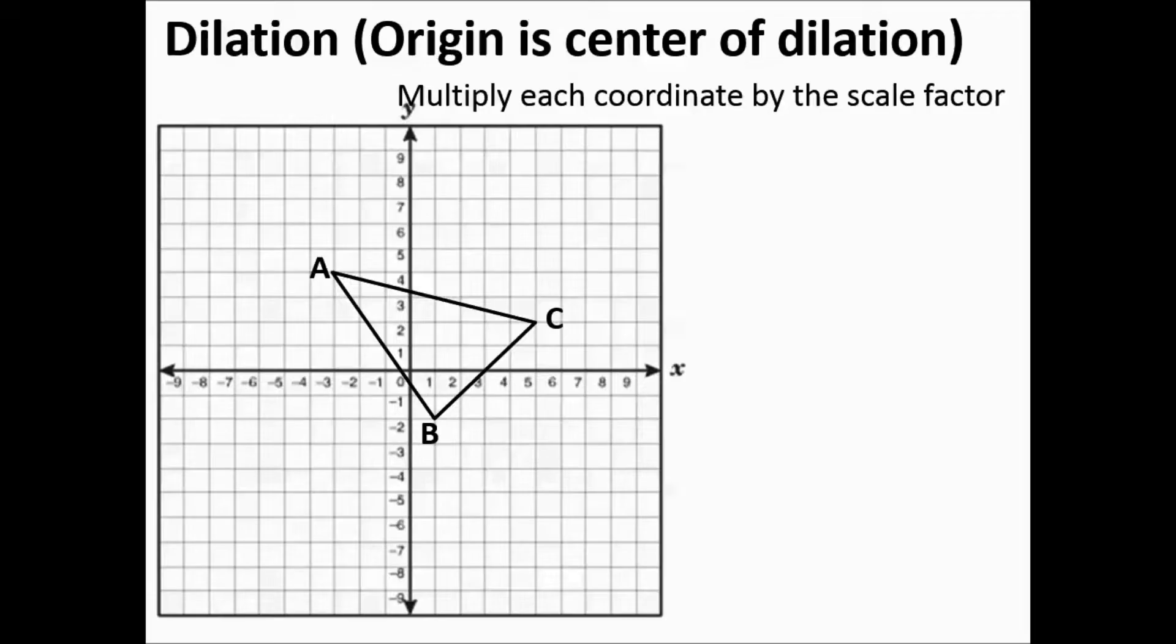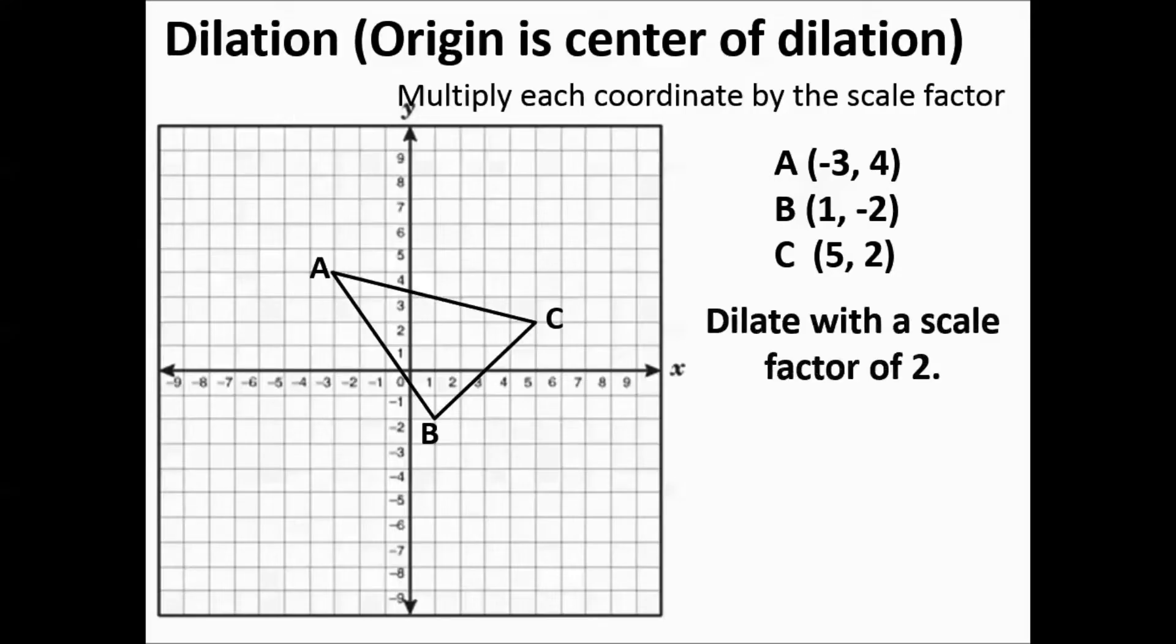Let's figure out the points. So we've got point A, B, and C. And you can double check that those are the right locations. And then we're going to dilate with a scale factor of 2. If we're dilating with a scale factor of 2, the new shape is going to be larger. It's going to be similar to the current triangle, but it's going to be larger.